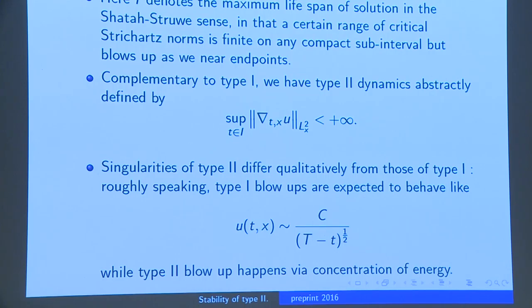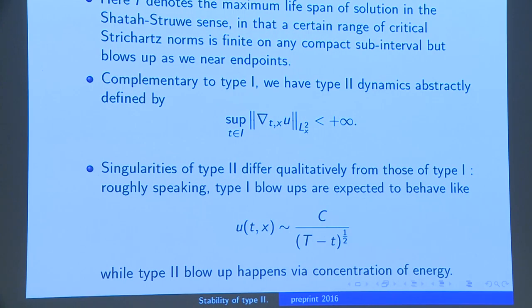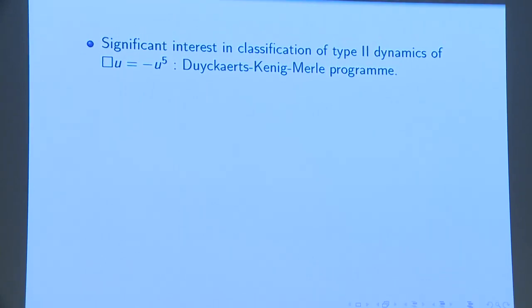It is very easy to exhibit type 1 dynamics of singular character by taking the ODE solution and truncating it to ensure finite energy. These were known, of course, for a long time — trivial to construct. However, type 2 dynamics of an interesting character are much, much more subtle, as we learned, and are a more recent phenomenon to understand.